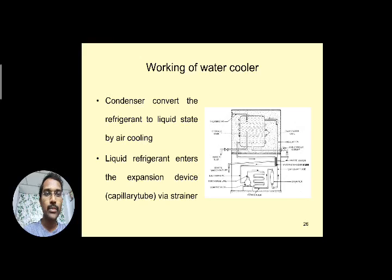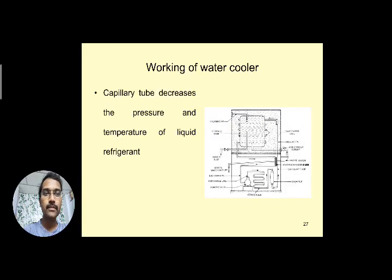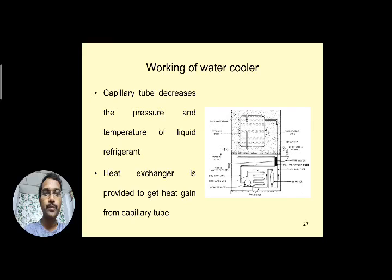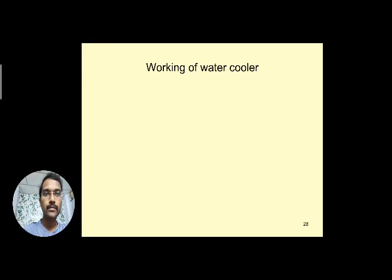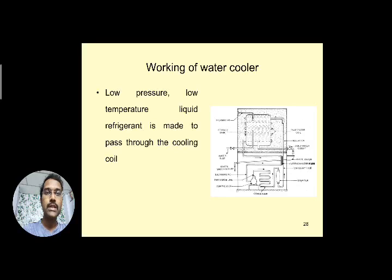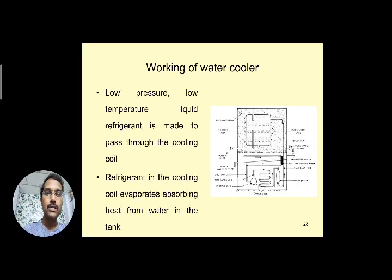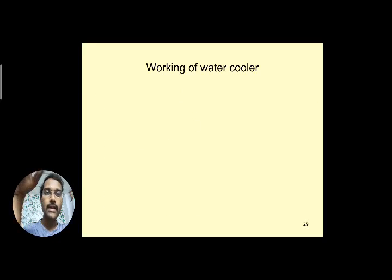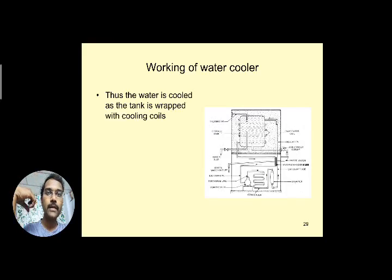In the condenser, a phase change occurs from vapor to high-pressure liquid refrigerant, cooled by air — forced type using a fan. The liquid refrigerant enters the strainer or dryer to remove moisture content, then the capillary tube decreases the pressure and temperature simultaneously. A heat exchanger is provided where the capillary tube meets the suction line, exchanging heat between the high-temperature liquid line and the cool suction line. The low-pressure, low-temperature liquid refrigerant then passes through the cooling coil.